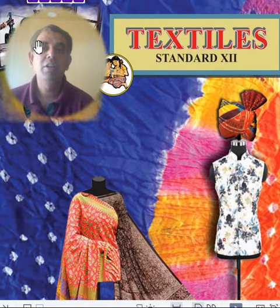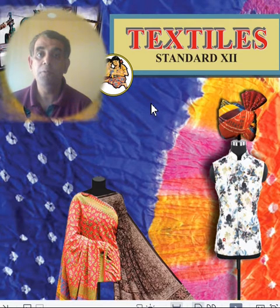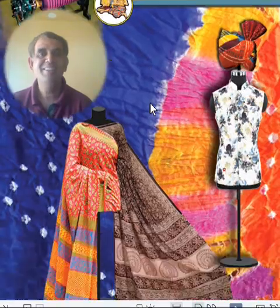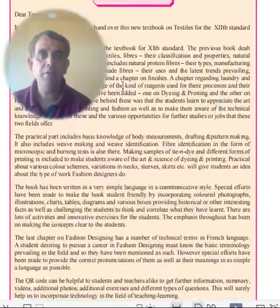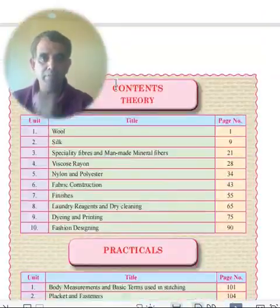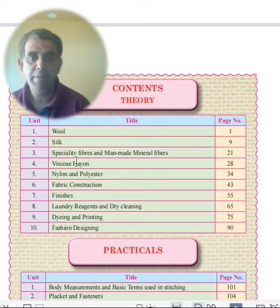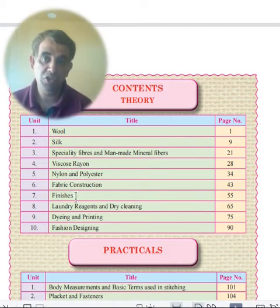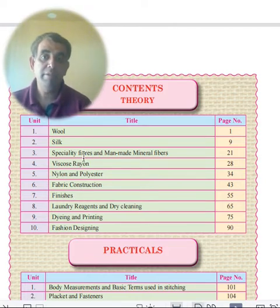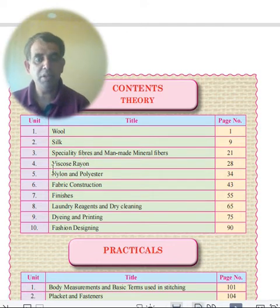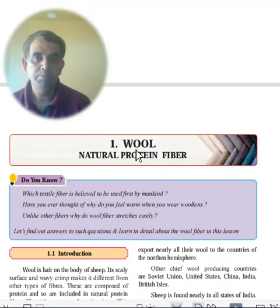Hi, I'm Vivek Shukla, and today we will be doing Textiles Class 12 Maharashtra HSC Board Chapter 1. The book has 10 chapters: wool, silk, man-made mineral fibers, rayon, nylon, fabric construction, finishes, laundry, reagents, and fashion designing. The first five chapters are based on specific fiber qualities. We start with Chapter 1: Wool.